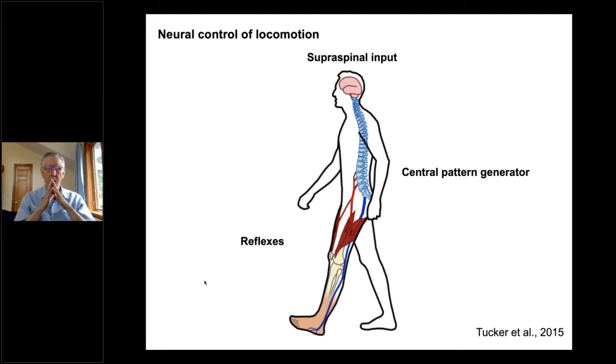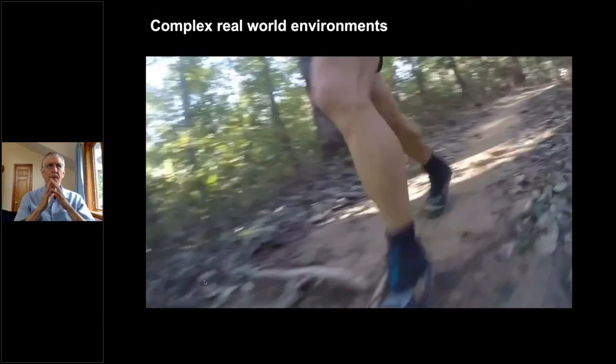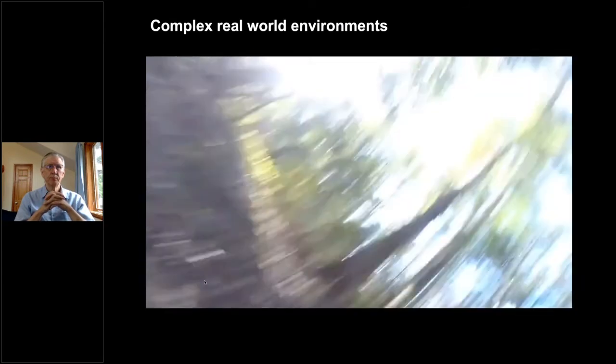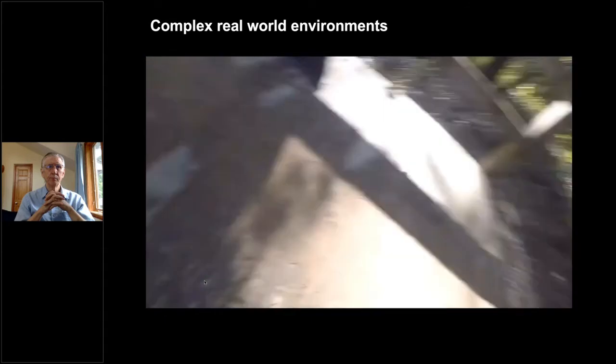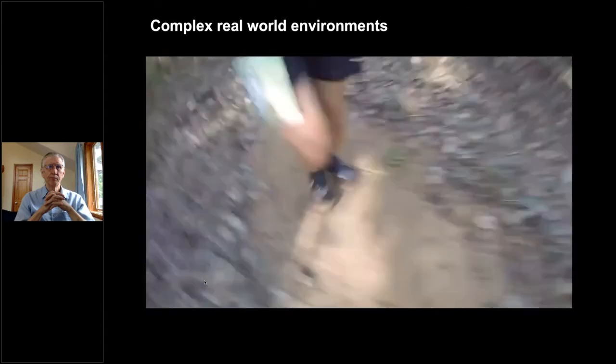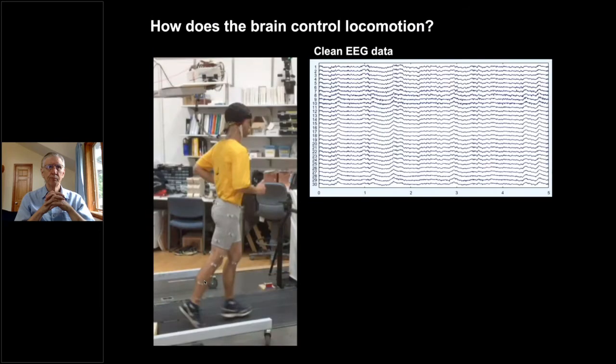Obviously to move around in real world environments or even just respond to stimuli, we're going to need more than just simple treadmill walking that's unperturbed. In particular, if you go outside, you can imagine the world is very complex. You have a lot of different things on the ground, you have to worry about tripping hazards. So what we don't want is to fall on our face when we're moving out in the real world. So of course, we study this in the lab, in this case, using mobile EEG.